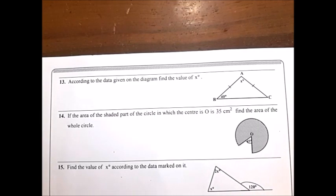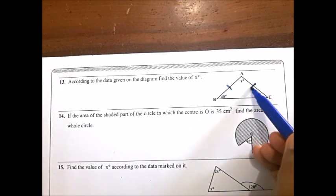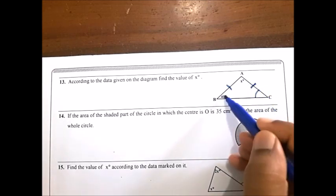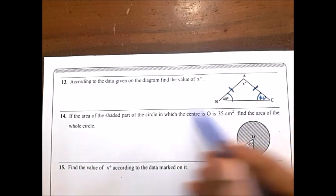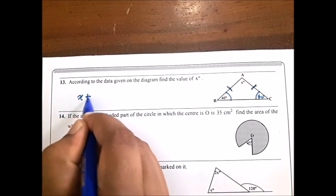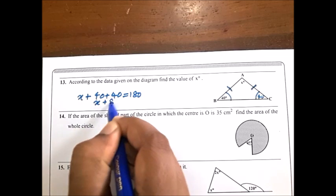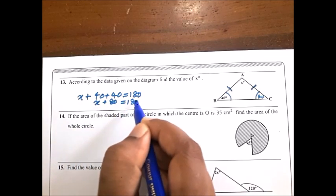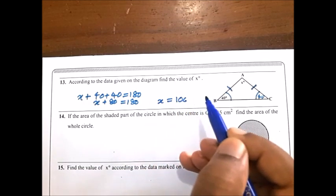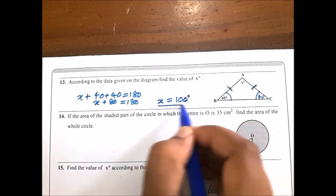For the 13th question, find the value of X. In this diagram, AB and AC are equal sides. In a triangle, if two sides are equal, the opposite angles are equal — here both are 40 degrees. The sum of interior angles of a triangle is 180. So X plus 40 plus 40 equals 180; X plus 80 equals 180; subtract 80; X equals 100 degrees.